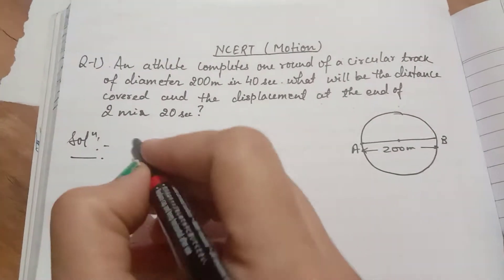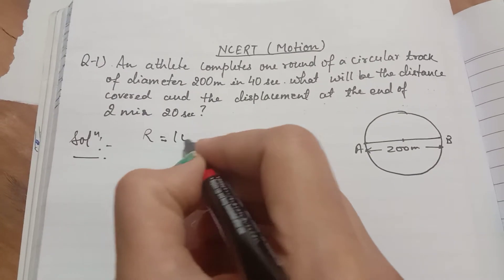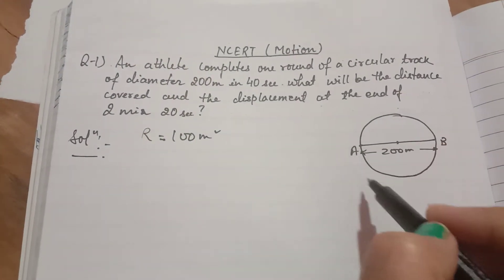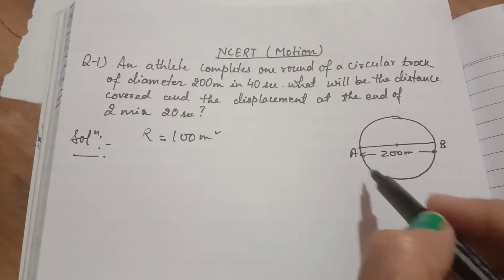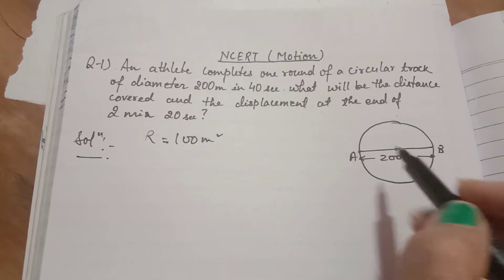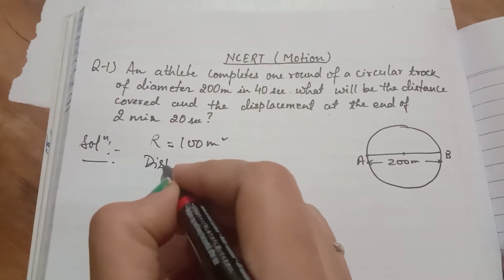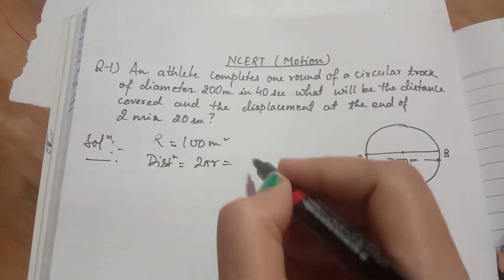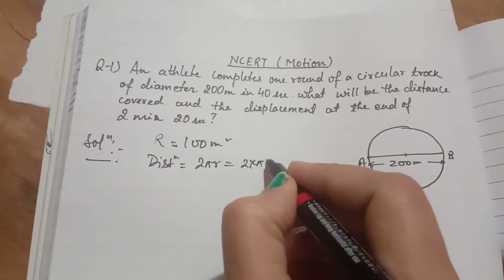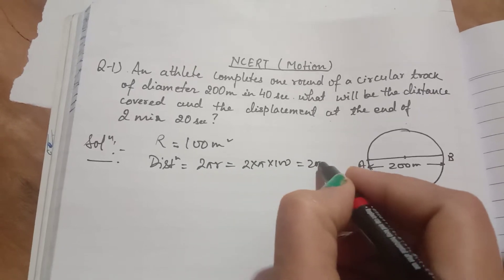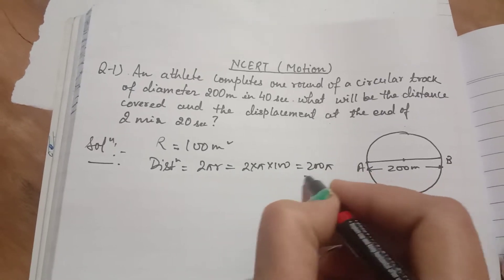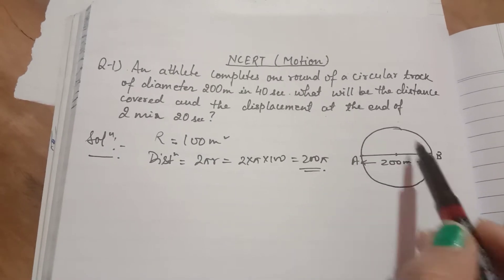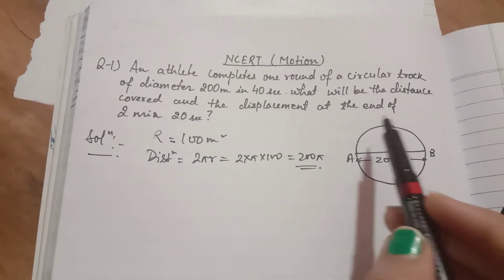The diameter is given, so first find the radius. The radius will be 100 meters. One complete round means the person covers the circumference. The distance completed in one round is 2πr, which is 2 × π × 100 = 200π meters — that is the distance covered by the athlete in one complete round.